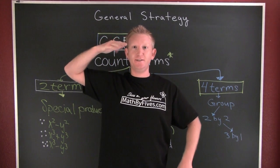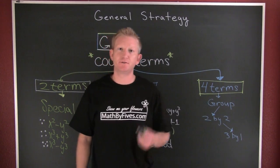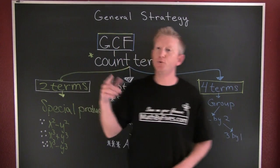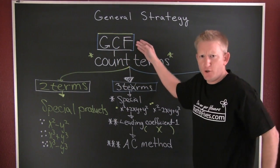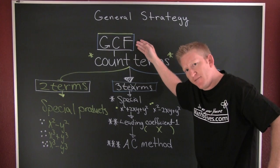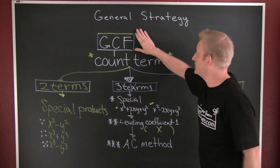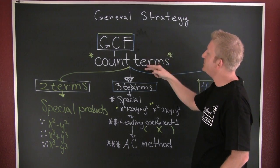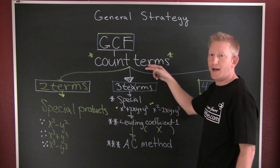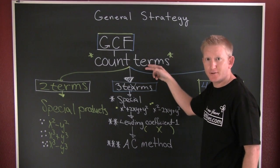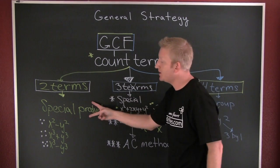Here's a general strategy for factoring polynomials. The first rule of factoring: always take out a common factor. After you've done that, count the remaining terms.